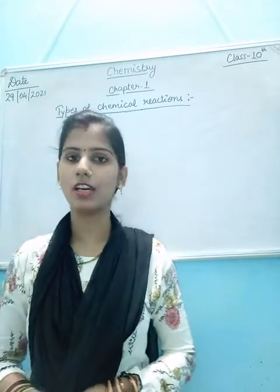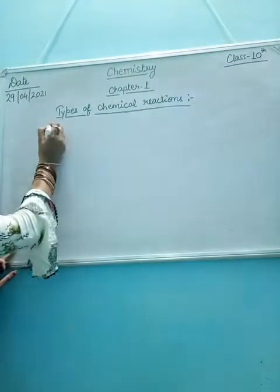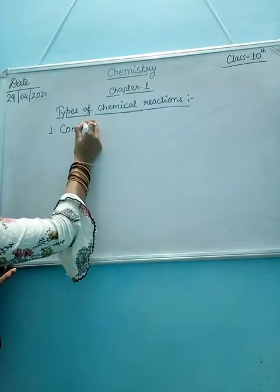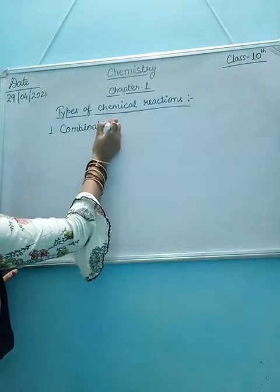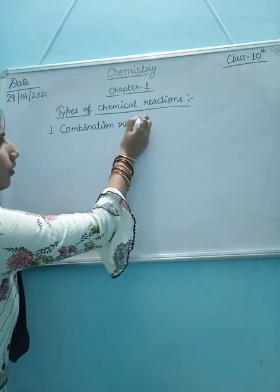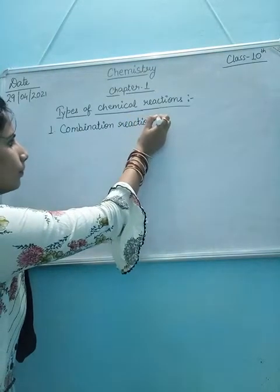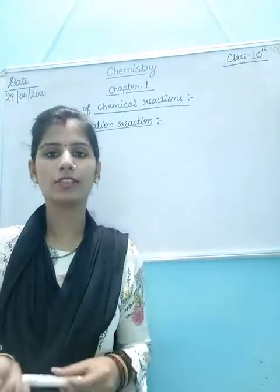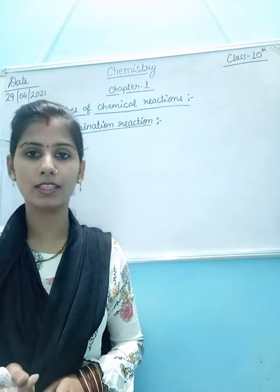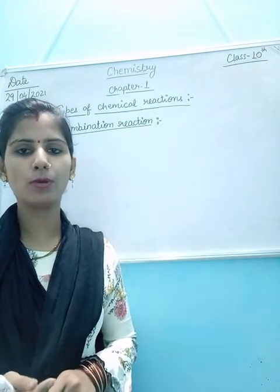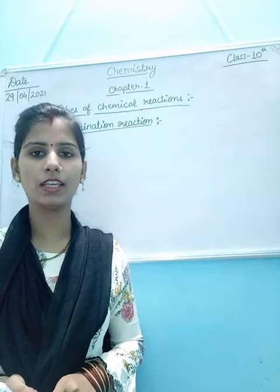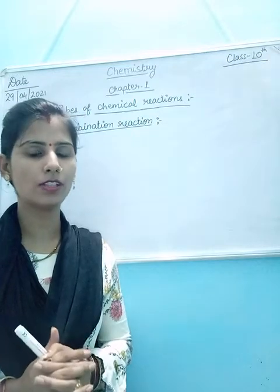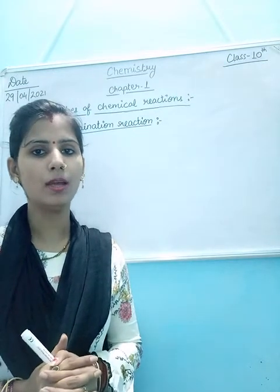How many types of chemical reactions are there? Number 1 is combination reaction. What is combination reaction? Combination reaction is a type of chemical reaction in which two or more than two reactants react with each other and form a single product. Students, you have to keep in your mind that in a combination reaction there is a formation of a single product.